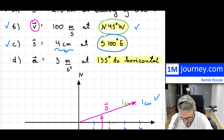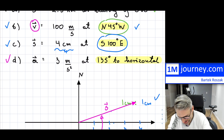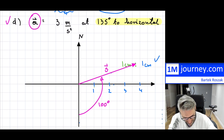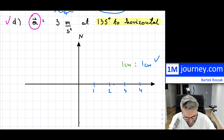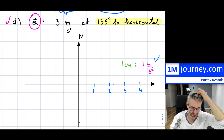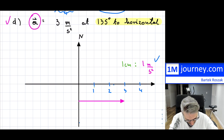And then the last one. So how will this one look? It's 3 meters per second squared — an acceleration. So again, I can just map it on. Let me clean it up. One centimeter is equal to 1 meter per second squared — mapping it onto acceleration. It's three of them, so three spots over.